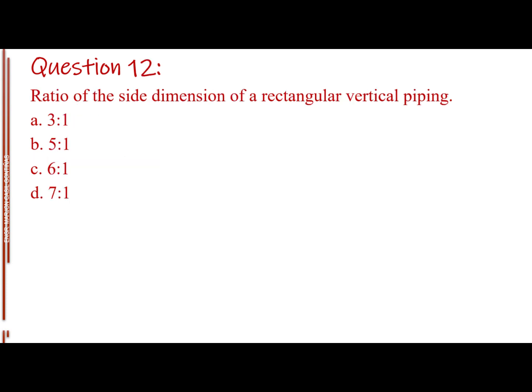Question number 12, ratio of the side dimension of a rectangular vertical piping. Letter A, 3 is to 1, letter B, 5 is to 1, letter C, 6 is to 1, letter D, 7 is to 1.